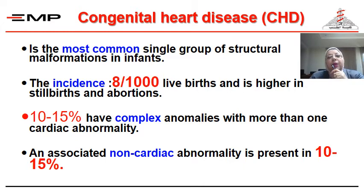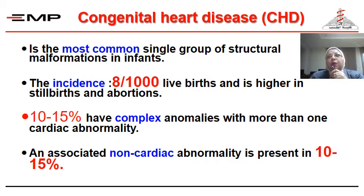10-15% have complex anomalies with more than one cardiac abnormality. That is to say, in a single patient you can have a VSD, transposition of the great arteries, pulmonary stenosis, and atrial septal defect. They are so complex and it's a blessing that we have normal hearts. An associated non-cardiac abnormality is present in 10-15%. That is why if you find a patient with a renal abnormality, you have to look for a cardiac abnormality and exclude it in that patient.